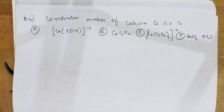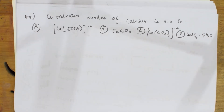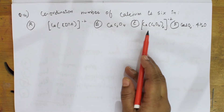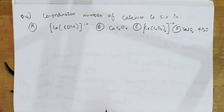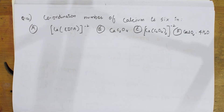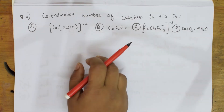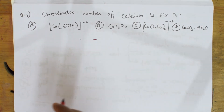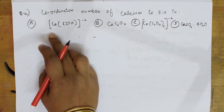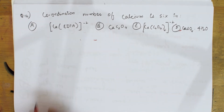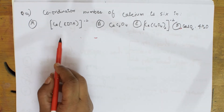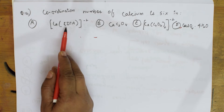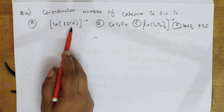Now let's come back and do the next question. This is a grade 12 coordination chemistry question. Here they said the coordination number of calcium is 6 in which compound. They have given us the answer as coordination number 6 — I have to draw structures and find out in which compound this is. What is coordination number? Coordination number is the number of nearest surrounding atoms around the central metal atom. In this case, calcium is the central metal atom. This is calcium EDTA. What is EDTA? EDTA is ethylenediamine tetraacetate.